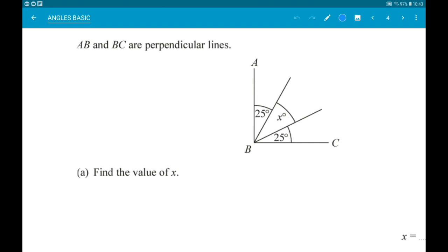Okay, next up. Here we're told AB and BC are perpendicular lines. That means they meet at 90 degrees. Find the value of x. Okay, so we know that x add 25 and 25 has to be 90. So x add 50 is 90. So x is 40 degrees.